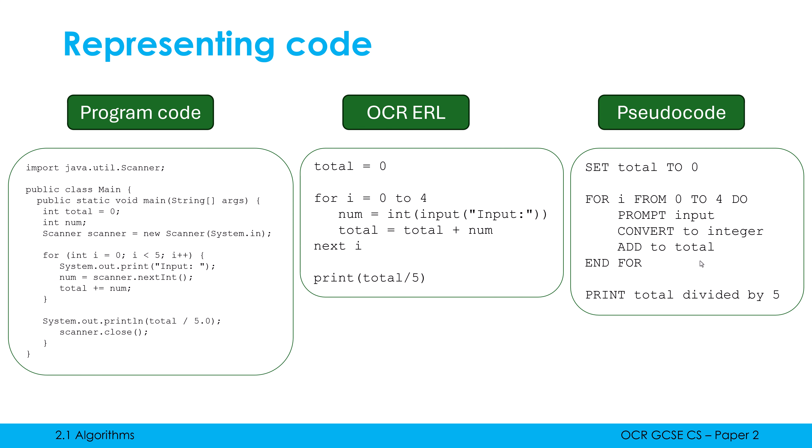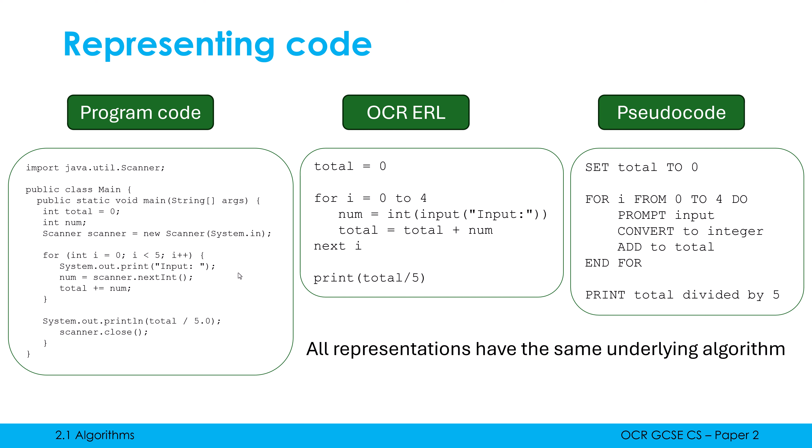Let's not forget that there are loads of different languages. This is the same algorithm represented in Java. It looks a bit nastier, especially if you're used to Python, but a Java programmer would understand this. If you don't know Java, a lot of this stuff here is confusing. That's why we might rely on pseudocode instead of the slightly more complicated, strict program code. But the whole point of all of this is that all the different examples I've shown you represent the same underlying algorithm — that doesn't change. The set of instructions is the same, the order is the same, just shown in different ways.